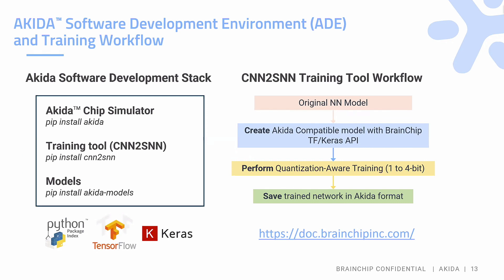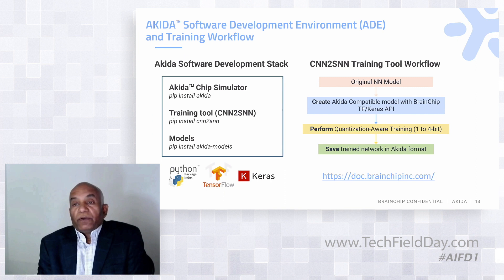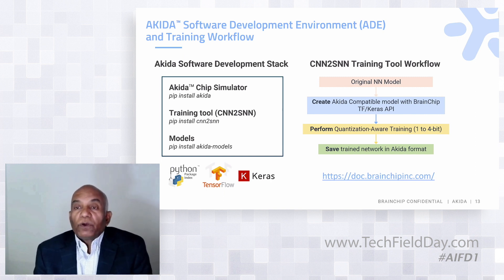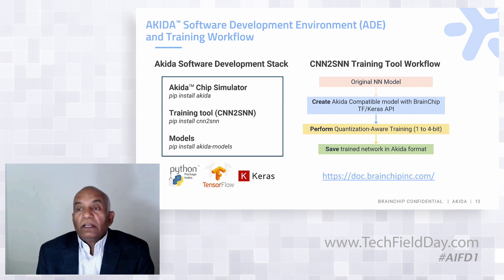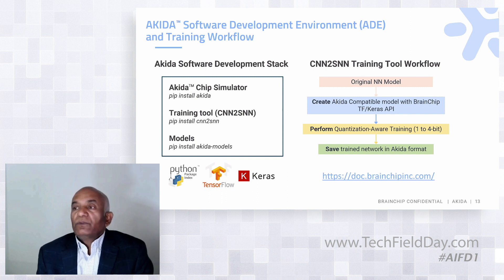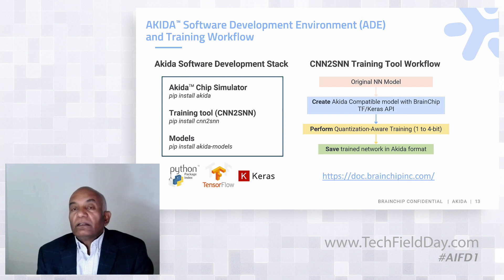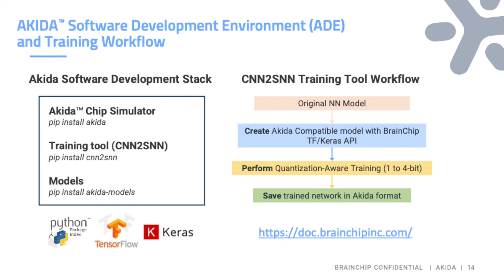Somebody asked about software — what software do we have? Because neuromorphic things are very difficult to program. A lot of people have given up trying to program the correlates for IBM TrueNorth, and Intel has done slightly better. What we said is nobody is going to program our chip from scratch, so we adapted the industry-standard Keras tools. You take a standard CNN trained in the cloud, figure out what functions are supported in our Akira IP, map it to our functions, retrain, and save it in TensorFlow Keras.